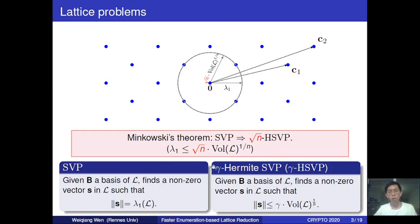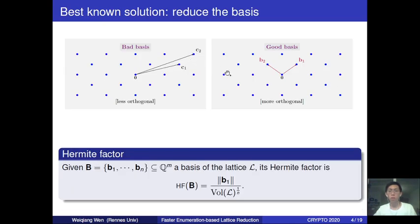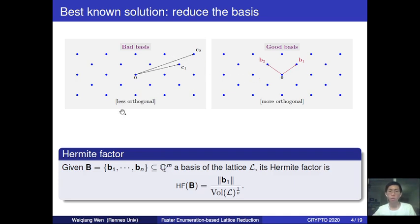To solve this problem, the best known solution is to reduce the given basis to obtain a good one. To quantify the quality of the basis, one can use the so-called Hermit factor, which can be computed as the norm of the shortest basis vector—normally the first one—divided by the normalized volume of the lattice. Once you can reduce the basis to a smaller Hermit factor, you can use it to solve the approximate Hermit SVP problem with a smaller approximation factor.